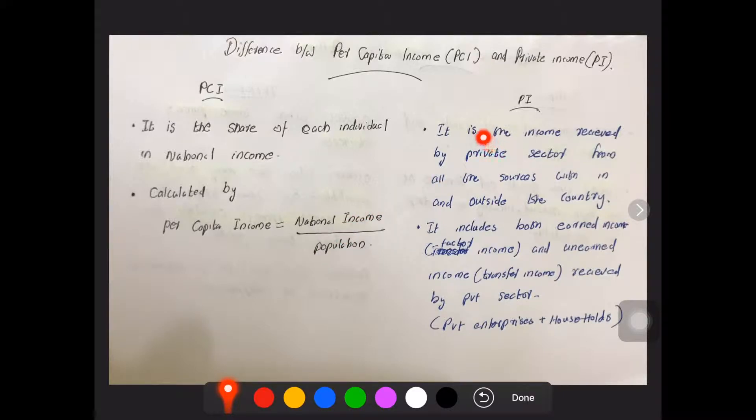So what is private income (PI)? It is the income received by the private sector from all sources within and outside the country.